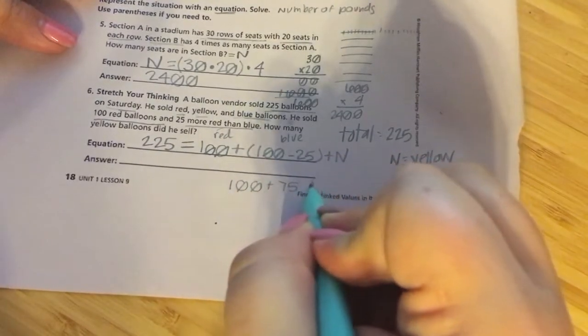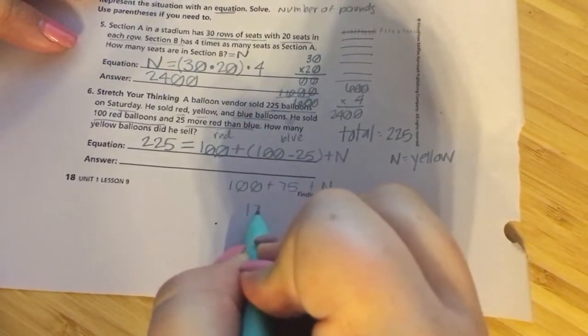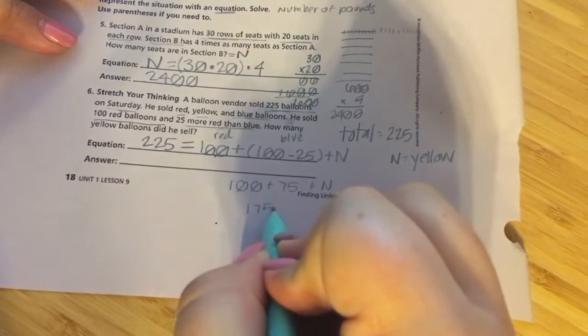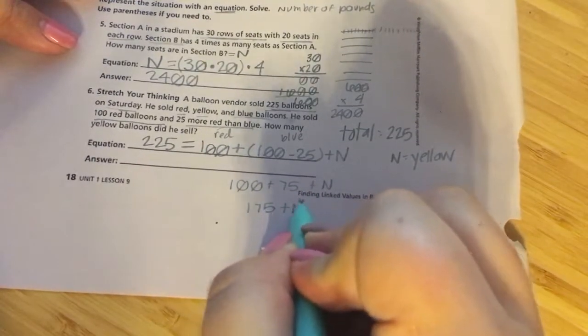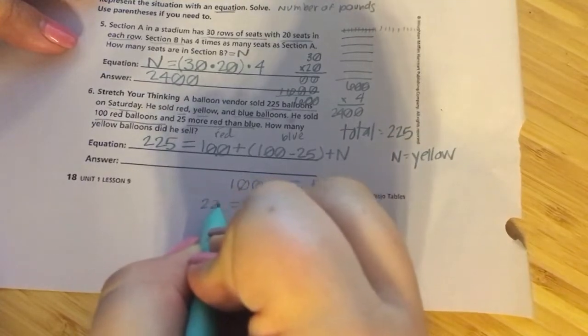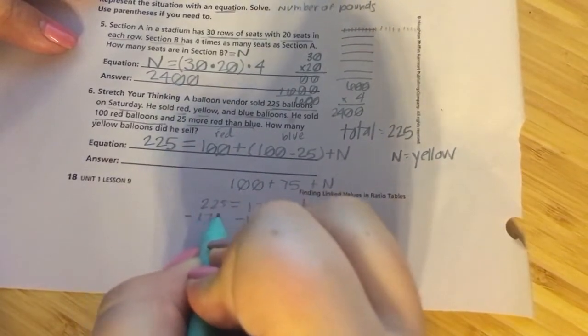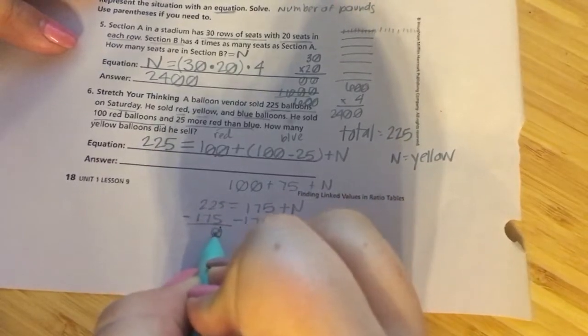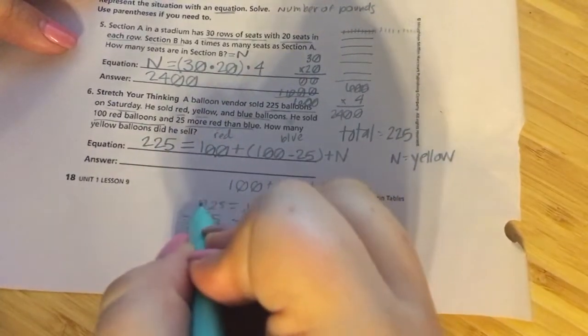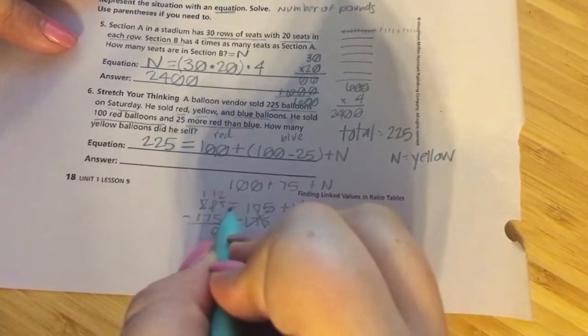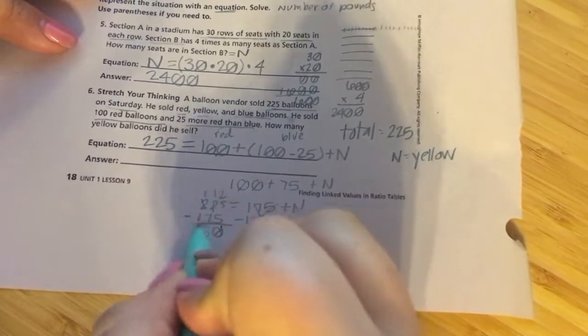So 100 plus 75, 100 minus 25 is 75. 175 plus N is equal to 225. I'm going to do the same thing on each side. I'm going to subtract to solve. 225 minus 175 is equal to 50. He sold 50 yellow balloons.